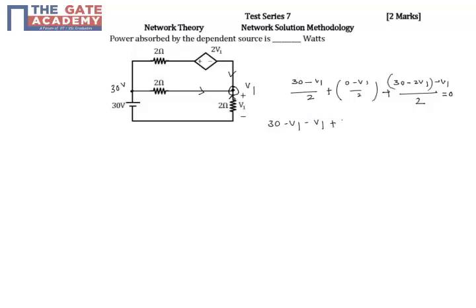So this is equal to 0. This is 30 minus v1 minus v1 plus 30 minus 3v1 equal to 0. So this is 60 minus 5v1 equal to 0. v1 equal to 60 by 5 is equal to 12 volts.